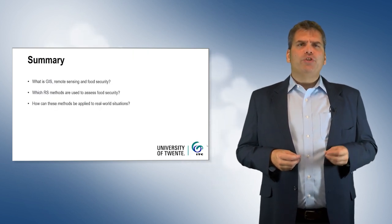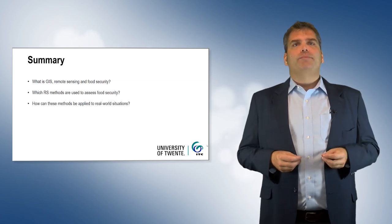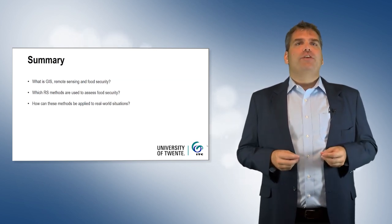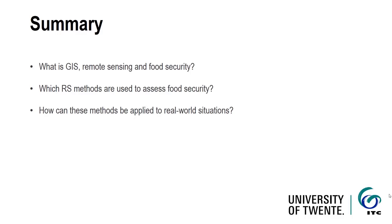In this brief lecture, we defined what geographic information systems and remote sensing are and how remote sensing is an important source of GIS data. We also defined food security in terms of its four major components. Within this context, we were able to explore how remote sensing can be used to estimate crop yield production and food availability, which is one of the components. Finally, we demonstrated how remote sensing can be applied to real world issues in food security analysis.